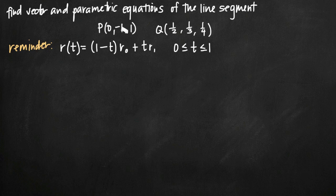One of the points is P(0,-1,1), and we'll call that coordinate point P. The other coordinate point is Q(1/2, 1/3, 1/4), and we're going to call that Q.